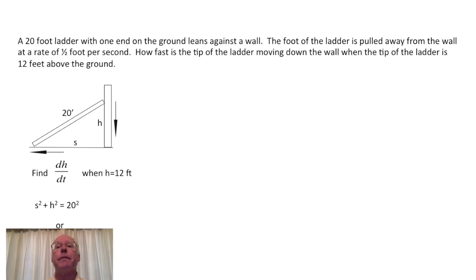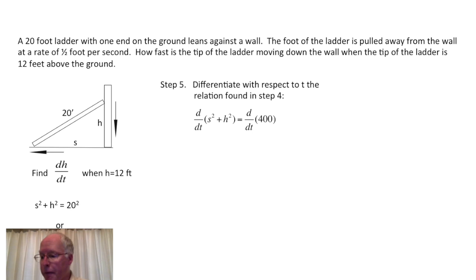Once we have an equation for the relation between the variables, it's time to perform the differentiation with respect to t. This will lead to the value of dh/dt that we seek. So we now want to differentiate with respect to t the relation found in step four. We place a d/dt on each side of the equation: d/dt of s squared plus h squared equals d/dt of 400. If two things are equal, then their derivatives are equal. We've used the fact that the derivative of a sum is the sum of the derivatives. We now take the derivative with respect to t of both sides of this equation.